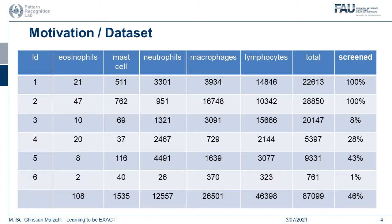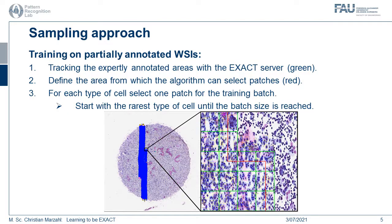We will go into the sampling topic on the next slide. Furthermore, we see here our screened area. Two slides are completely screened by an expert and annotated, while other slides are just screened for 1%. Now, let's dive into the sampling approach. On the last slide, we saw a strong class imbalance. The idea is: while our expert screens the dataset, we use the EXACT server to mark and save where our expert actually screened — which areas of the slide are annotated and viewed.